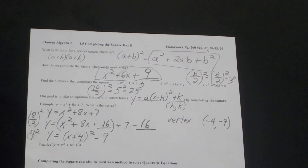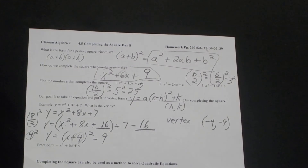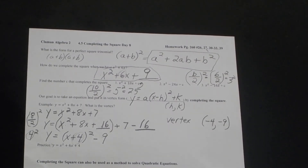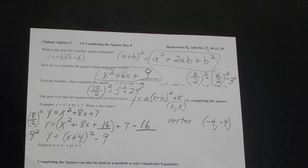I want to do one more example. On our paper I just did that one — I want to do number five. The equation is 0 equals 2x squared minus 3x plus 5.